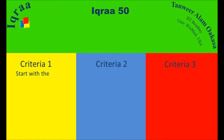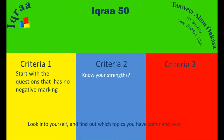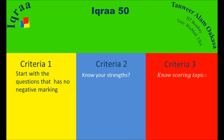There are three criteria to select questions. The first criterion is to start with questions that have no negative marking — here the integer type questions qualify. The second criterion is to know your strength: identify which topics you have command over. The third criterion is to know the scoring topics: vectors, 3D, complex numbers, circles, conic sections, matrices and determinants, limits, and continuity and differentiability.